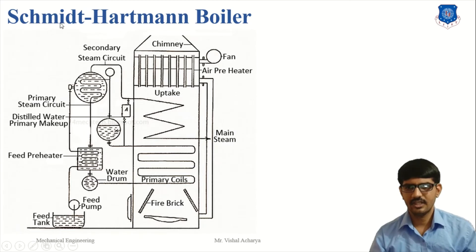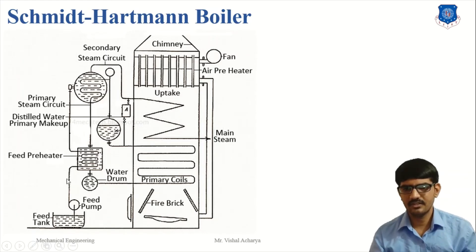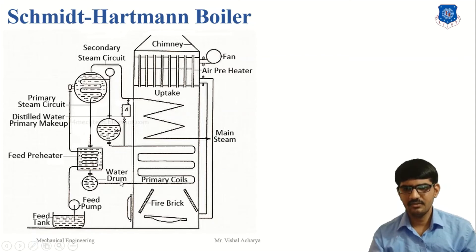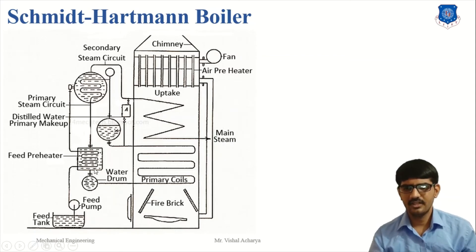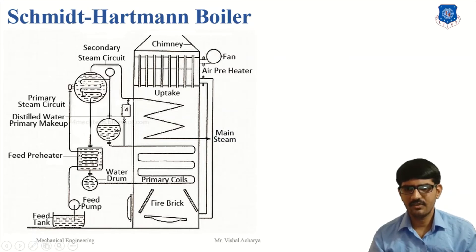Next is the Schmidt-Hartmann boiler. The main working principle involves two circuits. The first is the primary circuit and the second is the secondary circuit. In the primary circuit, distilled water is used, and in the secondary circuit, regular water is used. In the primary circuit, the pressure of the steam is above 100 bar, and in the secondary circuit, the pressure is only 50 to 60 bar.